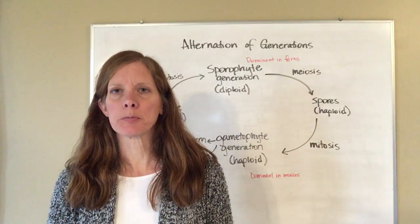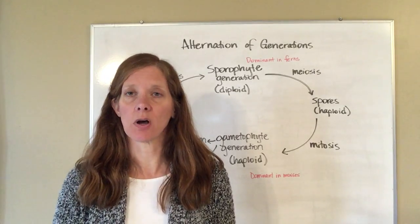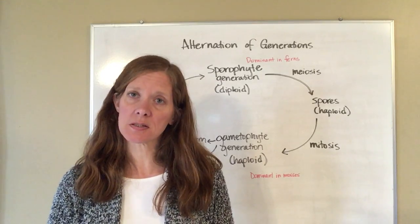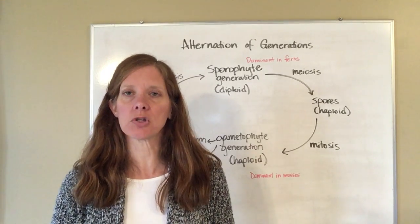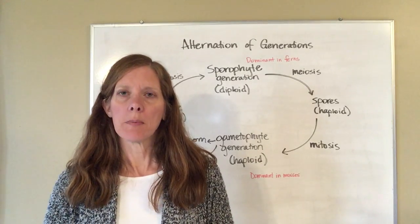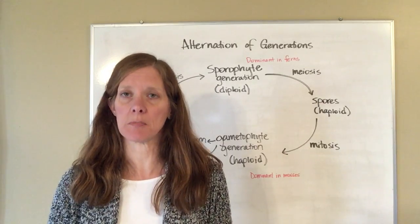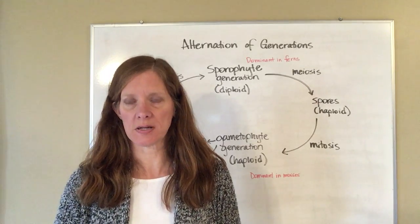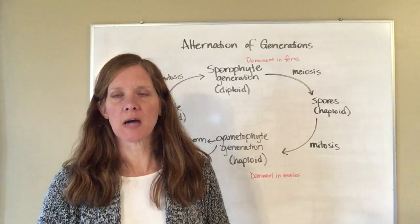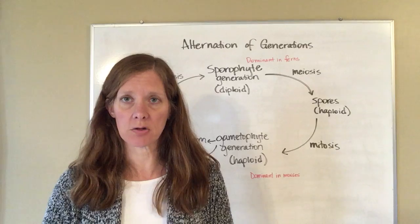In this chapter, probably the concept that's the toughest to understand is alternation of generations. Over the past couple of days you studied mosses and ferns and you've done coloring sheets trying to help you understand the difference between them. Alternation of generations, no matter which plant you're talking about, is basically the same process. On the board behind me I've put a diagram that summarizes alternation of generations.